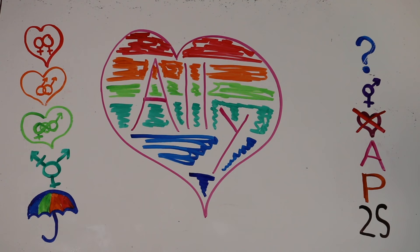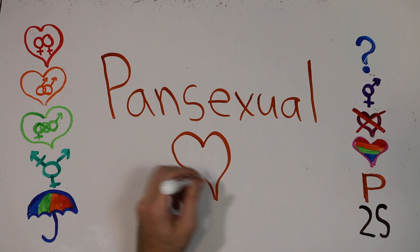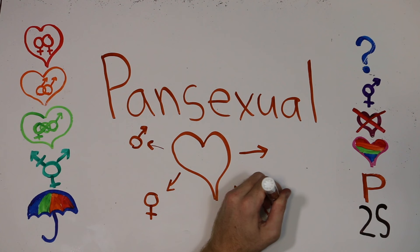P is for pansexual. Members of this sexuality are attracted to other people regardless of gender. This term is broader than bisexual, which limits attraction to just male and female. Pansexuality is also often related to an attraction to another person's personality.